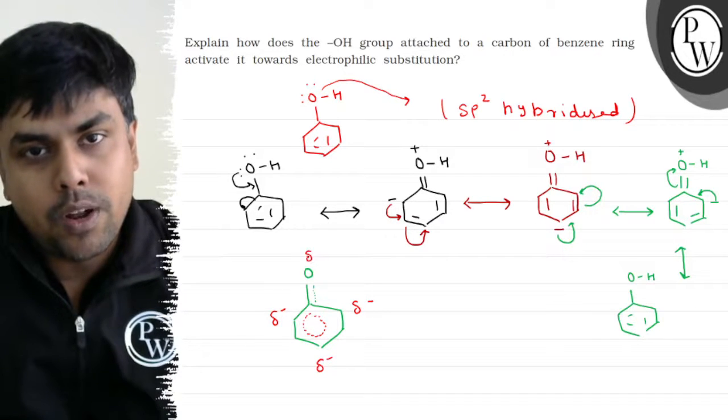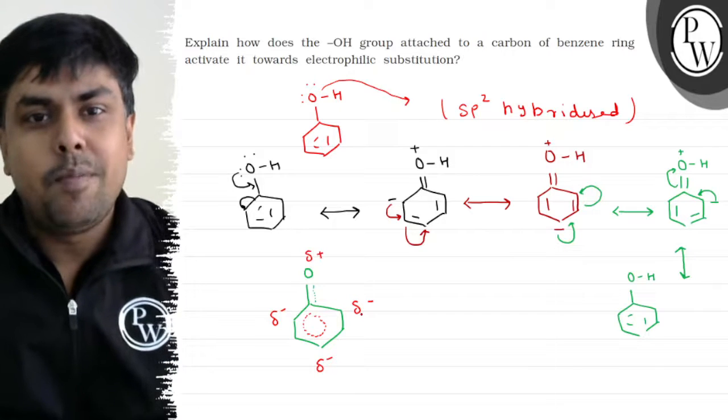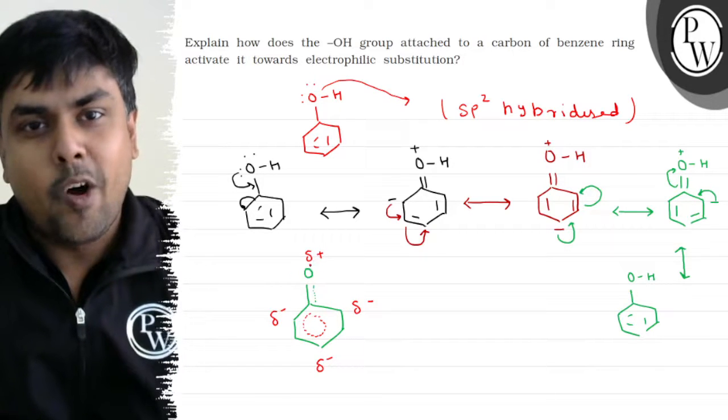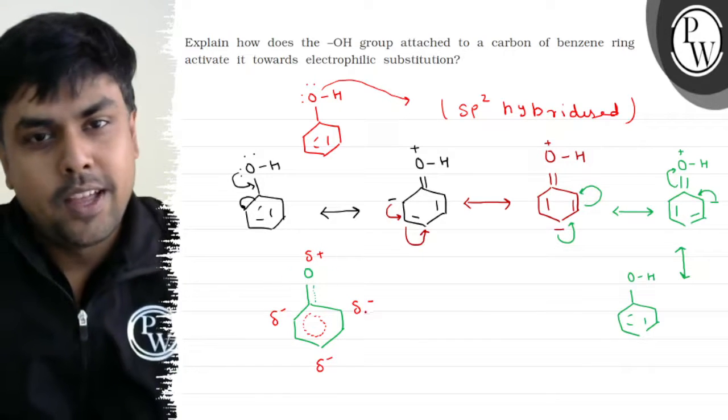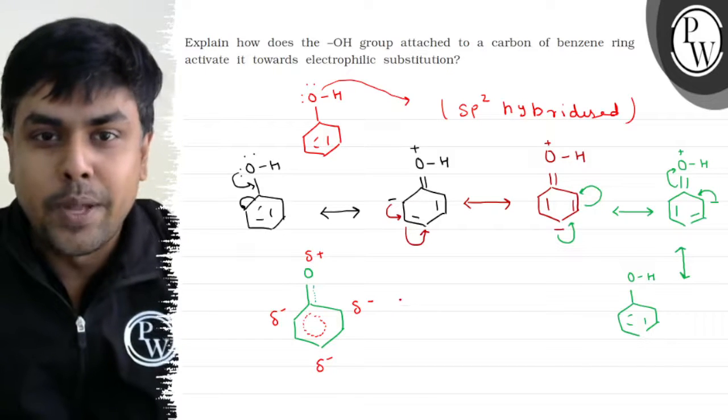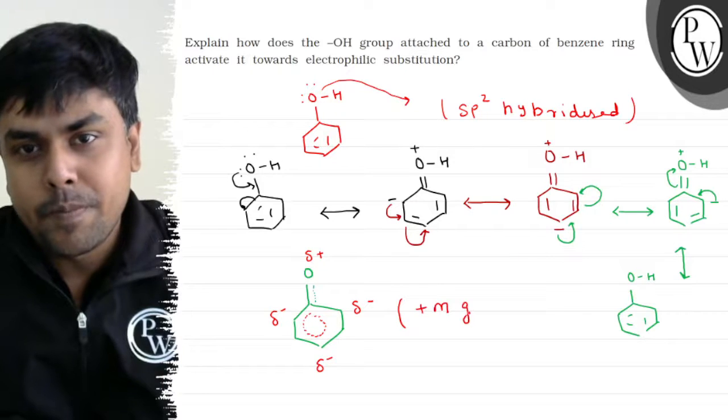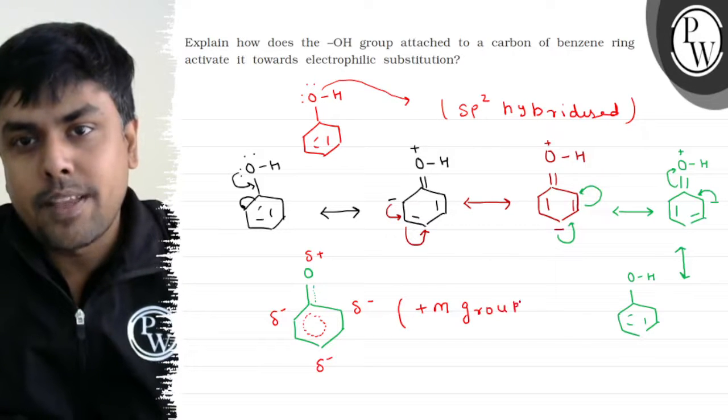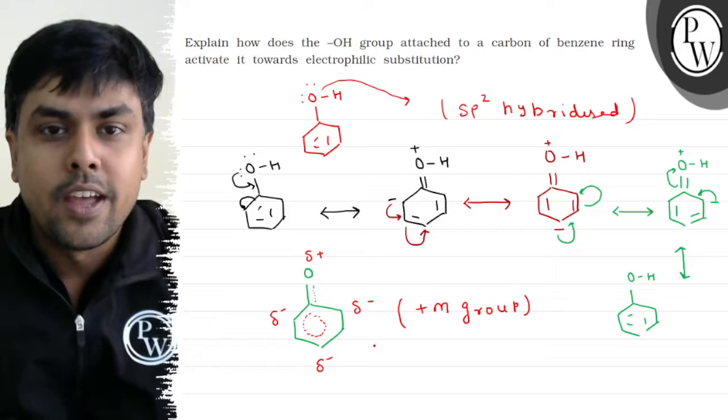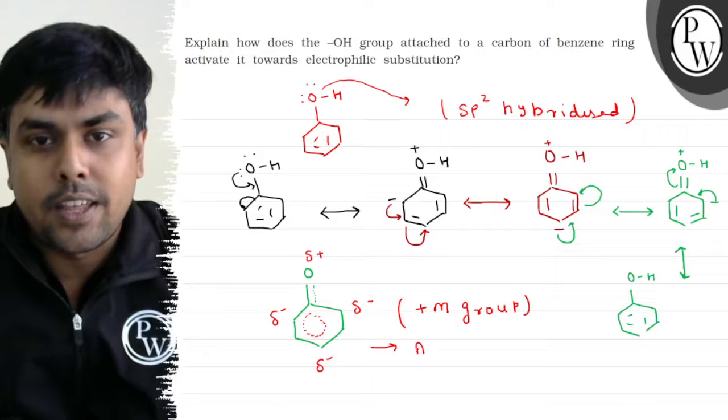Negative charge appeared at ortho position, para position, and ortho position. If I talk about positive charge, then delta positive appeared on oxygen. Now let's see: did the OH group give electrons to the ring? Absolutely. So can I say it will behave as a plus M group? Right. And the plus M group has activated the ring by donating electrons. Activated the ring.